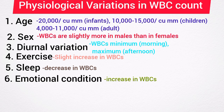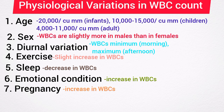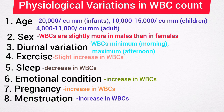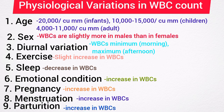Emotional conditions like anxiety cause an increase in white blood cell count. During pregnancy, there is an increase in white blood cell count. During menstruation, there is also an increase in white blood cell count. Number nine is parturition — there is an increase in white blood cell count during childbirth.